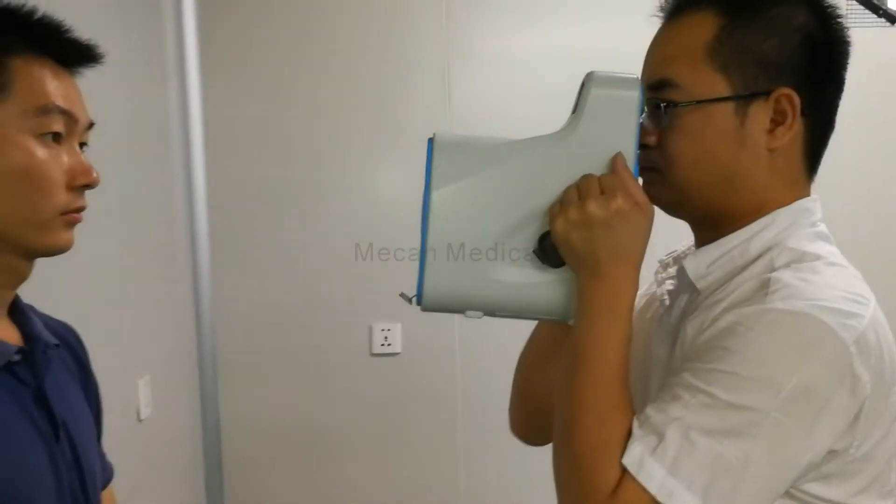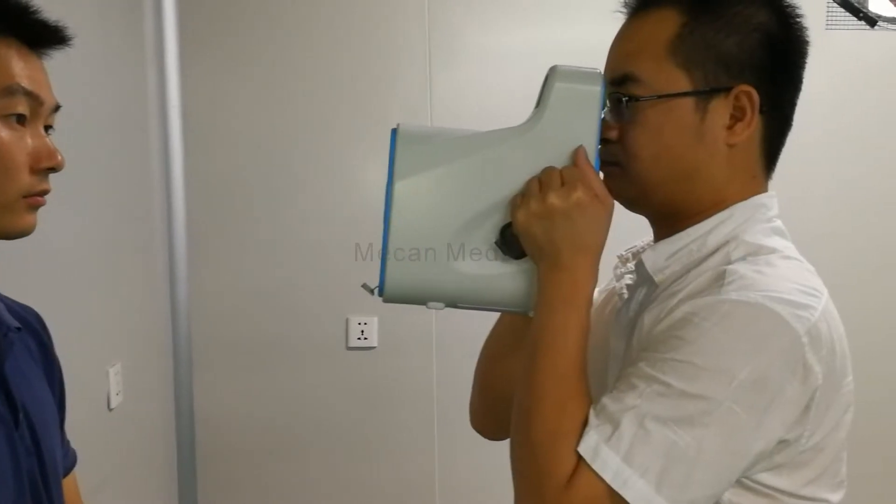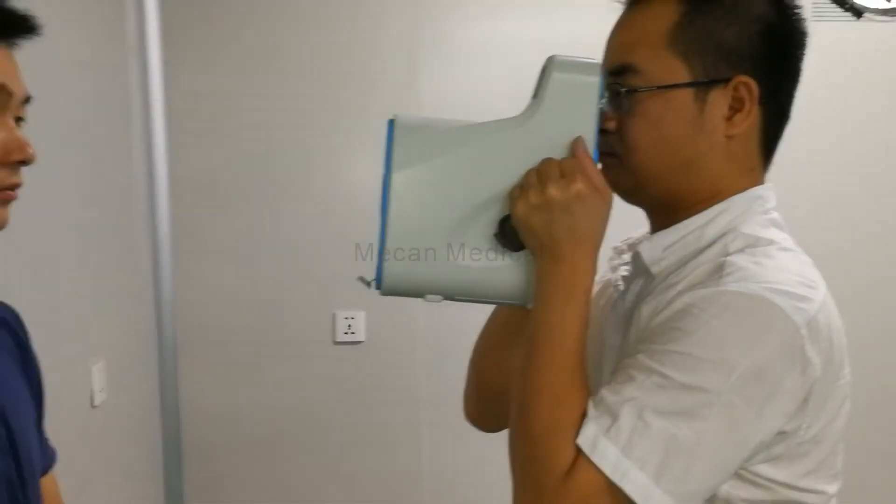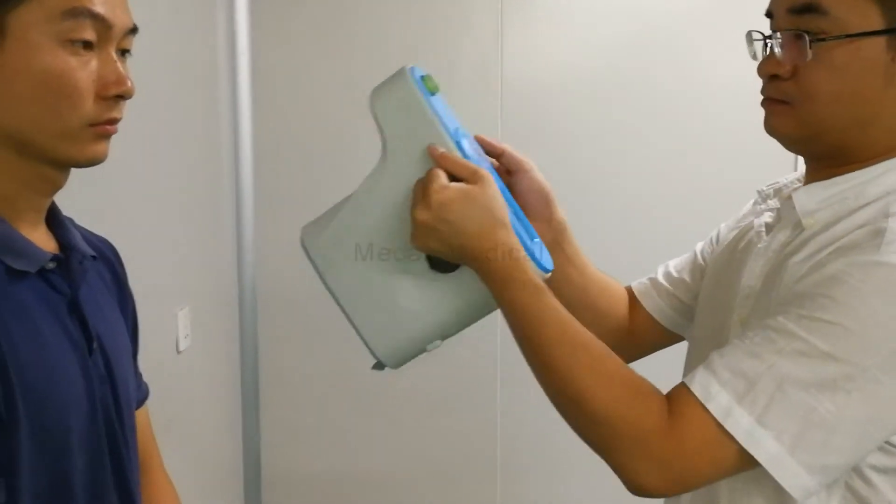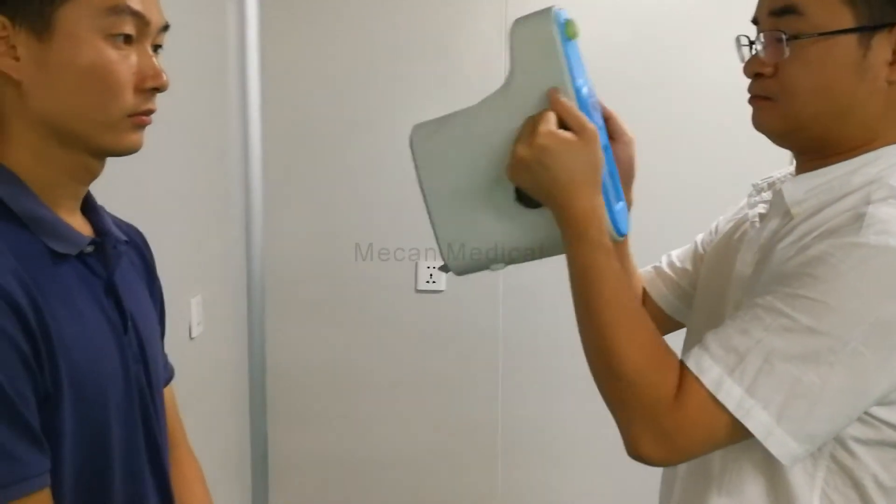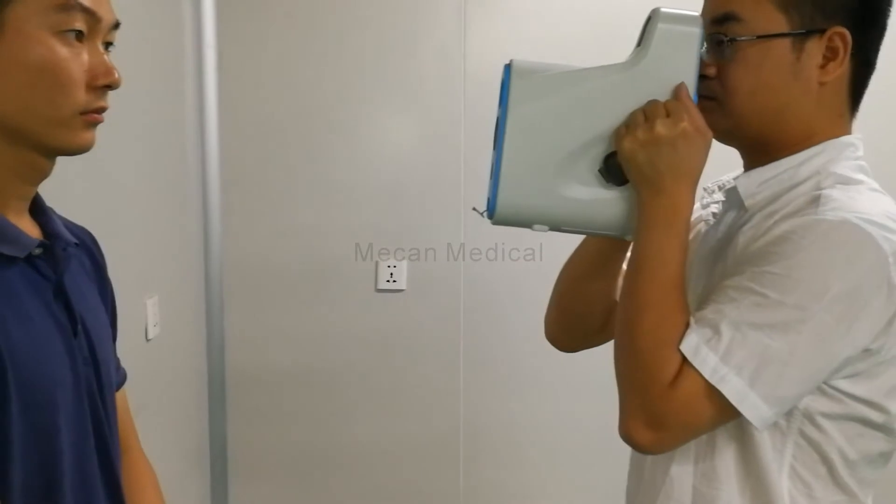Now the doctor can see two claws in this machine. He needs to adjust the distance to make the two claws become green. It becomes green, and keep seconds, it gets the result.